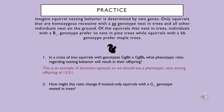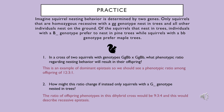How might this ratio change if instead only squirrels with a dominant G allele nested in trees? If only squirrels with a dominant allele at gene G nest in trees, the ratio of offspring phenotypes in this dihybrid cross would be 9 to 3 to 4, describing recessive epistasis. In this modified scenario, the recessive alleles at gene G would mask the effects of the alleles present at gene B, because recessive alleles would lead to ground nesting behavior. Since these squirrels nest on the ground, their tree nesting preferences would not matter, so gene B's effects would be rendered useless. With the recessive alleles of gene G hiding the effects of gene B, nesting behavior would be dictated by recessive epistasis, producing a 9 to 3 to 4 phenotypic ratio in offspring.